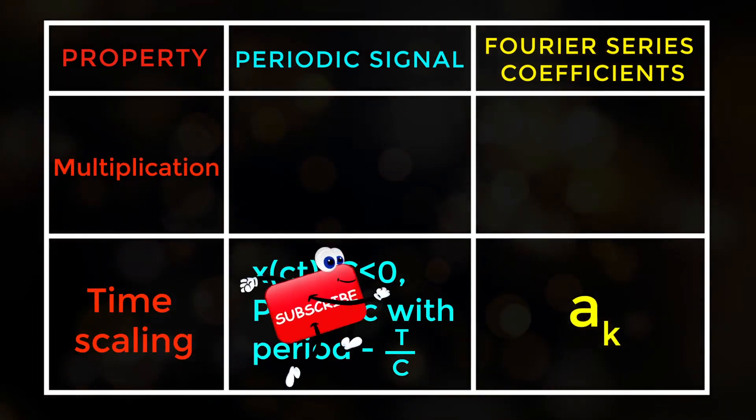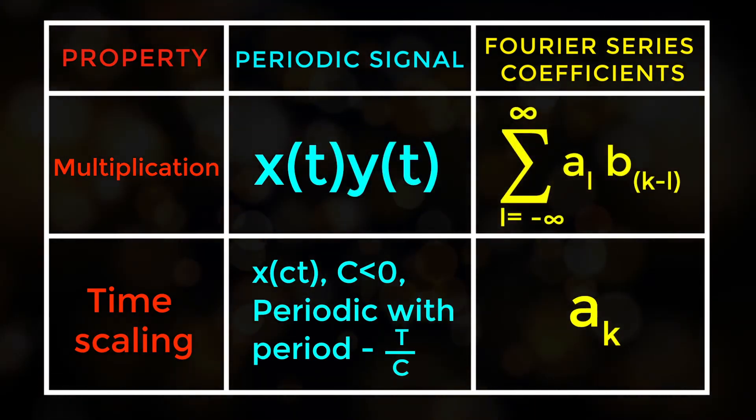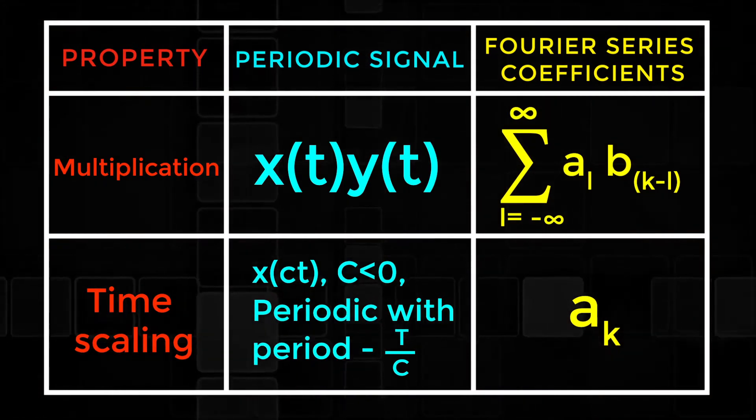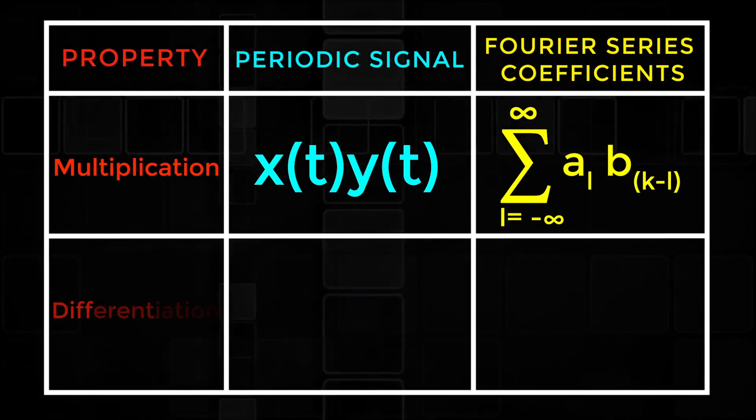Multiplication: Periodic signal x of t into y of t, Fourier series coefficient sigma l equals minus infinity to infinity of al into bk minus l. Differentiation property.